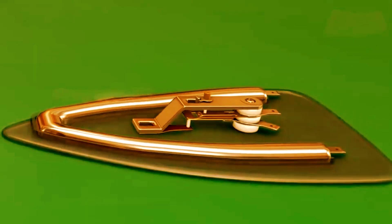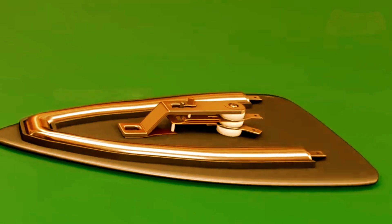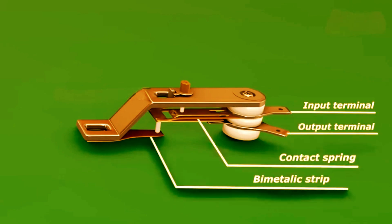It checks the temperature of the iron's metal base and turns off the heat if it gets too hot. The thermostat has input and output terminals, a contact strip, and a bimetallic strip.